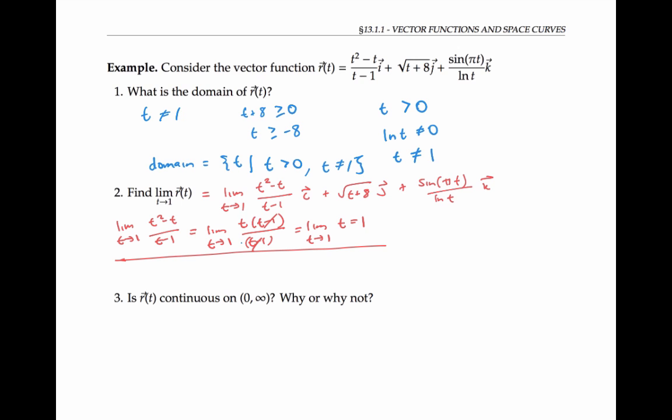Now for the second component, taking the limit as t goes to one of the square root of t plus eight, I can figure that out just by plugging in one for t. So that's just three.